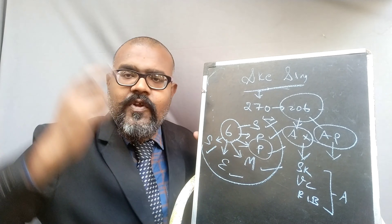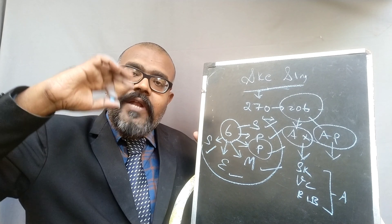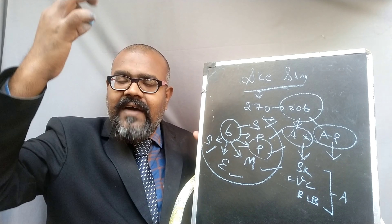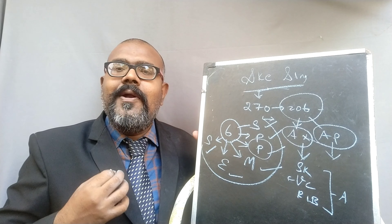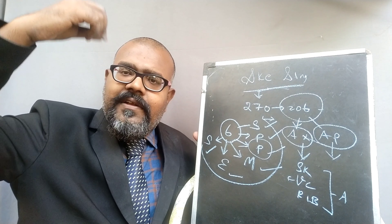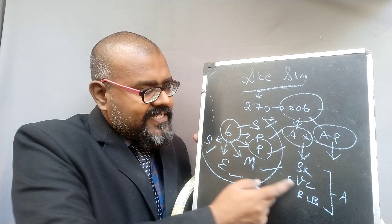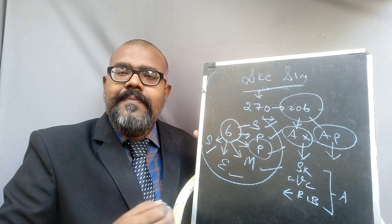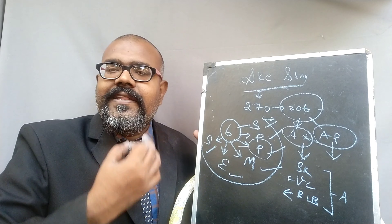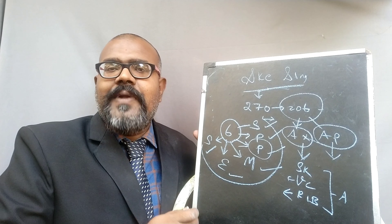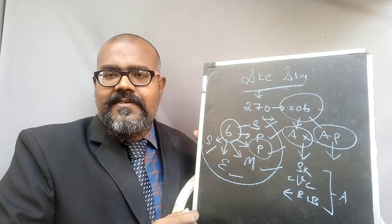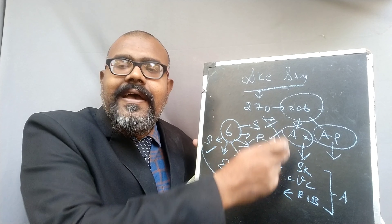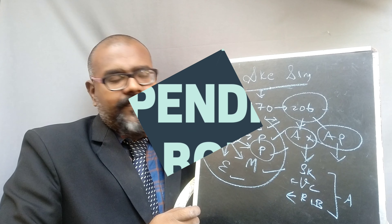The skull protects the brain. The vertebral column extends from the medulla oblongata down to the pelvic region. The ribs are present in the sternum region and protect the heart, lungs, and respiratory system. These are all the bones coming under the axial skeletal system.